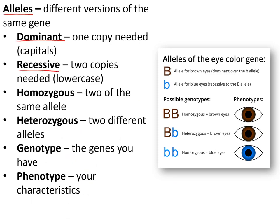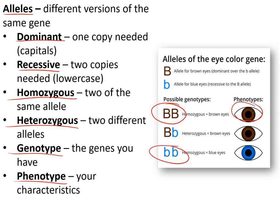Alleles are different versions of the same gene. Dominant alleles need only one copy to show the characteristic; recessive alleles need two copies. You can be homozygous — two of the same allele — or heterozygous — two different alleles. Your genotype is the genes you have; your phenotype is the characteristics that result. For example, homozygous dominant gives brown eyes, homozygous recessive gives blue eyes, and heterozygous also gives brown eyes.